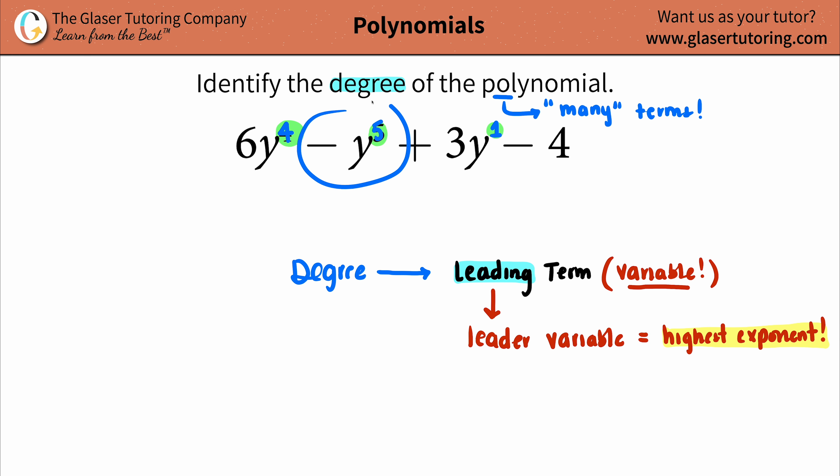Doesn't matter that this whole term is negative. We don't care about those. We're just looking for those exponents. So in this case, the degree would be that highest exponent. And what is it? Yeah, it's five. So you could say this is a fifth degree polynomial. You could say that the degree is five. That's all fine with me. And with that, we got an answer.